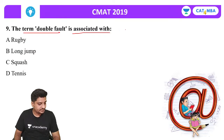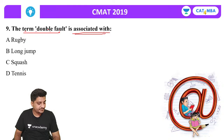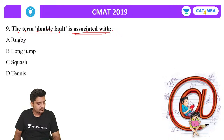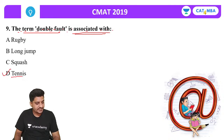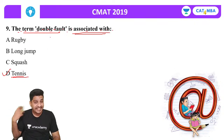Next question: The term 'double fault' is associated with which sport? The correct answer is tennis. In tennis, a wrong service is called a fault; a second wrong service is a double fault.